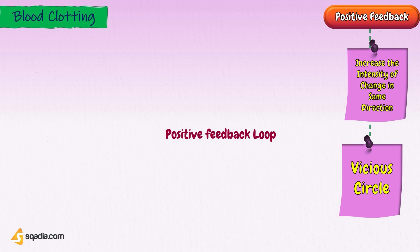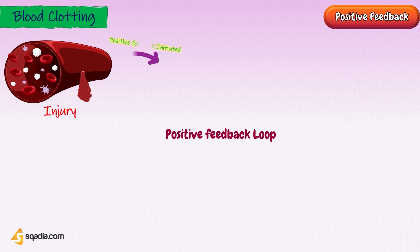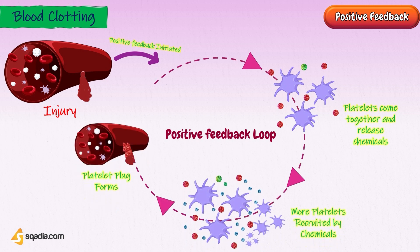One example of positive feedback occurs during blood clotting. Blood clotting is necessary to arrest bleeding during injury. When a wound causes bleeding, the body responds with a positive feedback loop to clot the blood and stop blood loss. Substances released by the injured blood vessel wall begin the process of blood clotting. Platelets in the blood start to cling to the injured site and release chemicals that attract additional platelets. As the platelets continue to amass, more chemicals are released and more platelets are attracted to the site of the clot. The positive feedback accelerates the process of clotting until the clot is large enough to stop the bleeding.